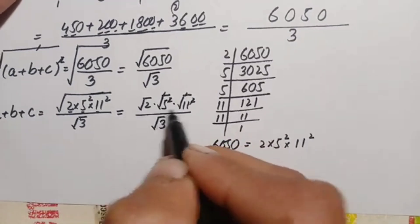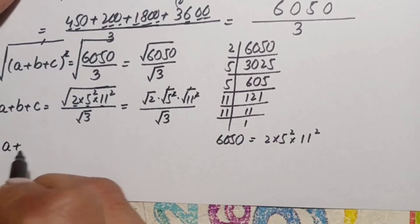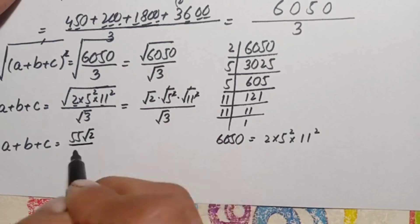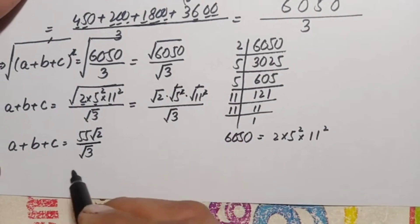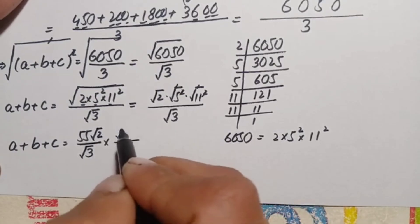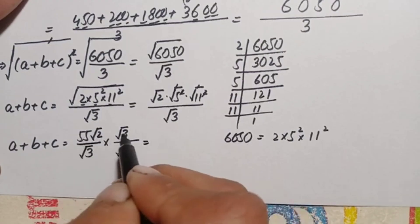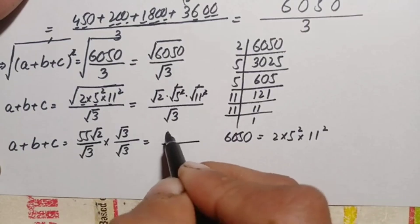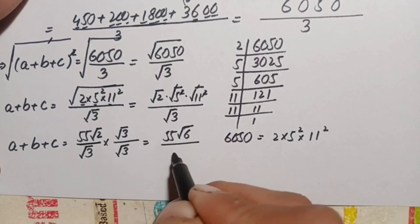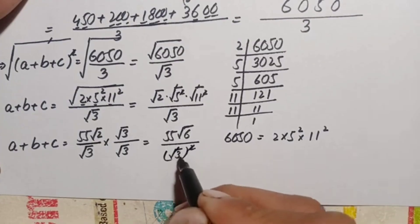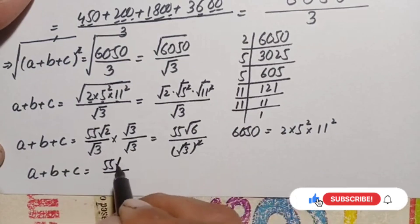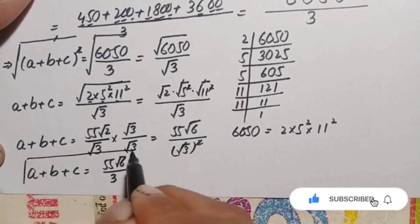So a plus b plus c equals 55 times the square root of 2 divided by the square root of 3. To rationalize the denominator, we multiply numerator and denominator by the square root of 3. This gives 55 times the square root of 6 divided by 3, since √3 × √3 = 3. So the final value of a plus b plus c is 55√6 divided by 3.